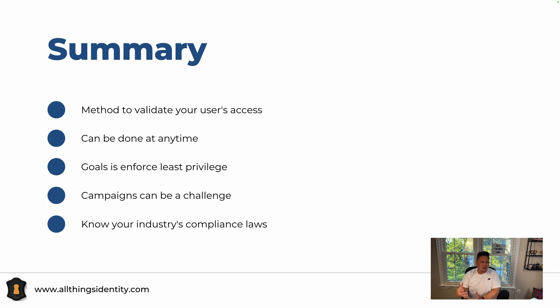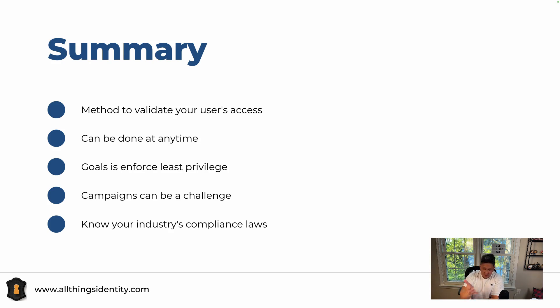So at the end of the year, you're not scrambling — you're giving the right time to really make sure that you give the right eyes to all the rights and you say, yep, this makes sense. So you hopefully eliminate rubber stamping. Your goal is to really enforce least privilege.